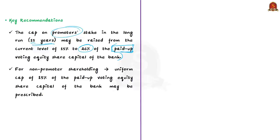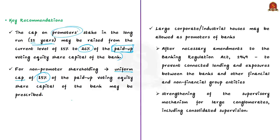Another recommendation regards non-promoter shareholding. The IWG recommended that a uniform cap of 15% of the paid-up voting equity share capital of the bank shall be applicable for all types of shareholders, excluding promoters. Most importantly, the IWG suggested that large corporate houses or large industrial houses may be allowed as promoters of banks by making necessary amendments to the Banking Regulation Act of 1949. This amendment will help strengthen the supervisory mechanism for such large conglomerates.